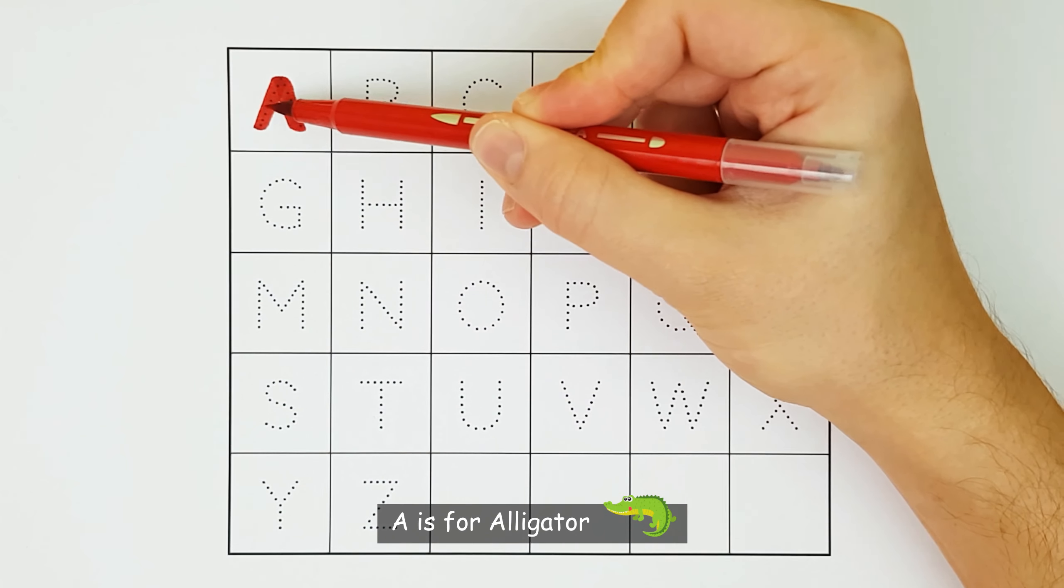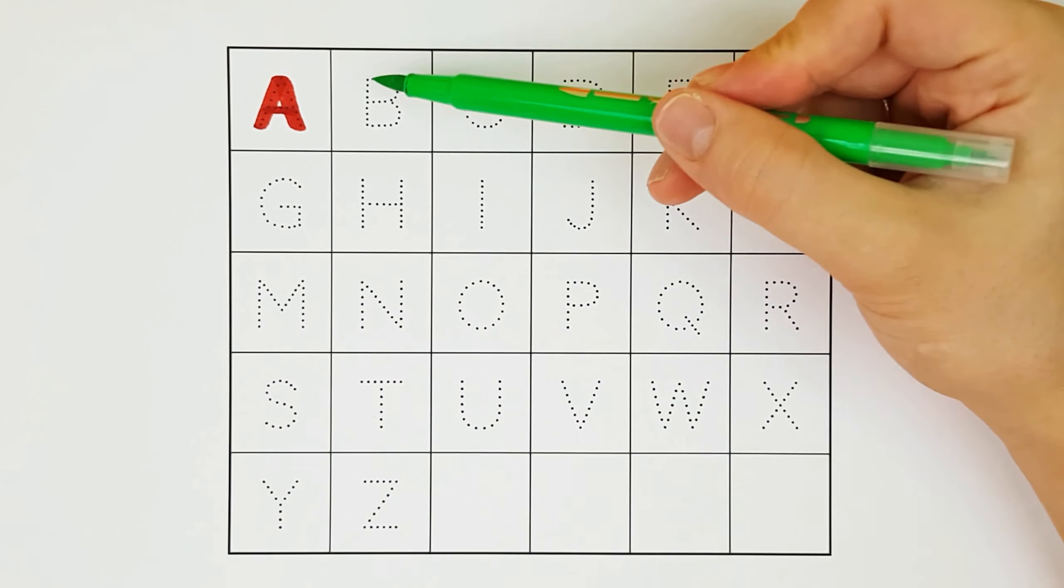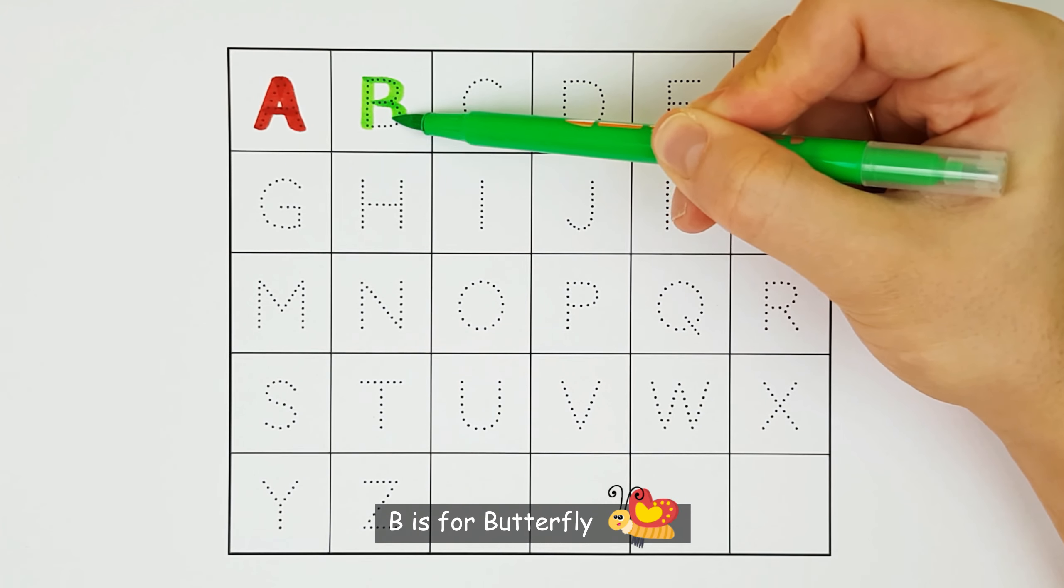A. A is for alligator. A. B. B is for butterfly. B.